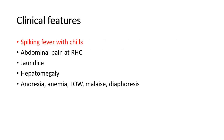The patient may present with symptoms such as spiking fever together with chills, and this is noticed in 90% of all cases. They can also have abdominal pain, especially at the right hypochondrium, due to capsular stretch of the liver.